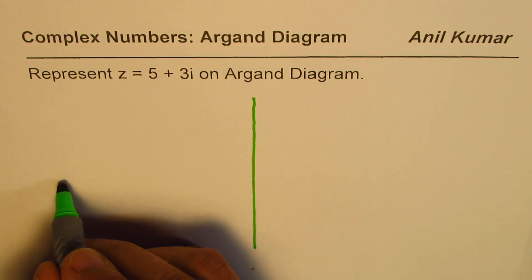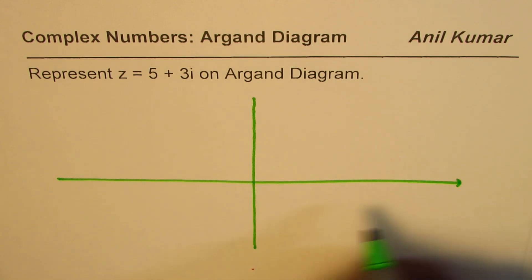Now Argand diagrams are the diagrams where the vertical axis represents the imaginary numbers, the horizontal axis represents the real numbers. So the horizontal axis will represent the real numbers and the imaginary numbers will be represented on the vertical axis.